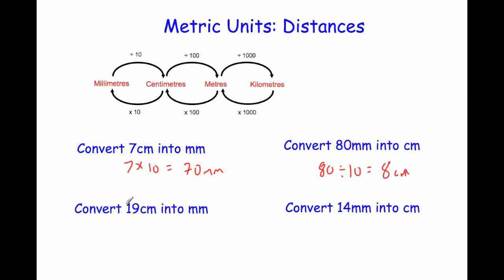Next: convert 19 centimeters into millimeters. To change from centimeters into millimeters we times by 10. So 19 times 10 equals 190 millimeters. That makes sense because if one centimeter is 10 millimeters, 19 centimeters would be 190 millimeters.